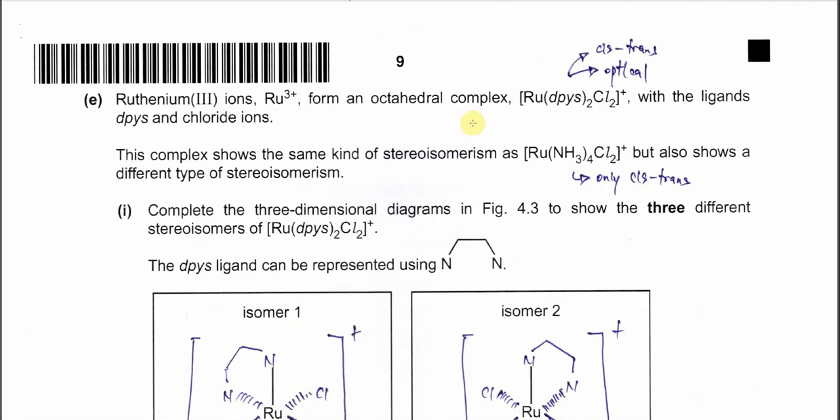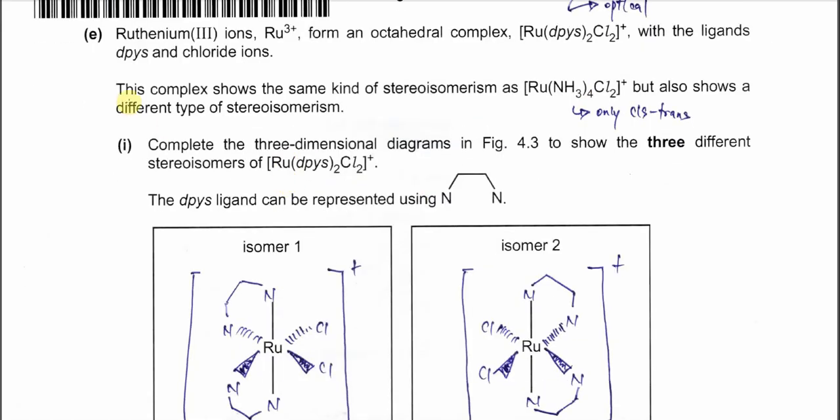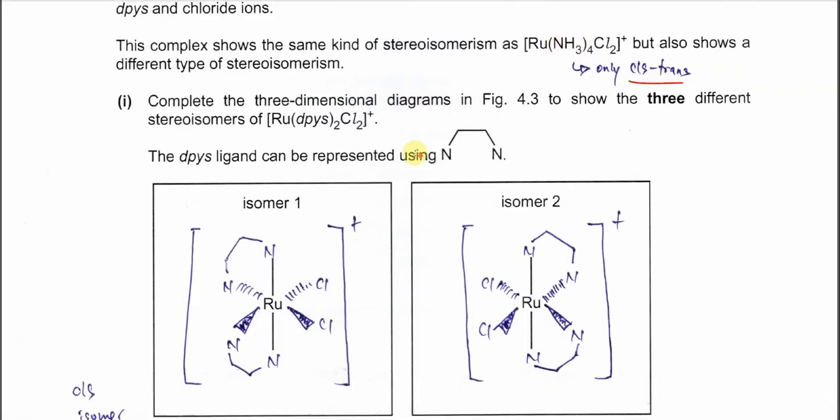Part E: We have ruthenium [Ru(dpys)₂Cl₂]⁺ ions forming octahedral complexes. It has two bidentate ligands and two monodentate ligands. This means these complex ions will form cis-trans and optical isomers together. This complex shows the same kind of isomerism as ruthenium with four ammonia and two chloride. But for that one, because they are all monodentate ligands, it can only form cis-trans isomerism.